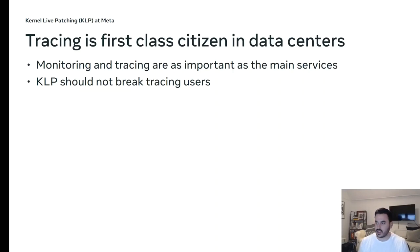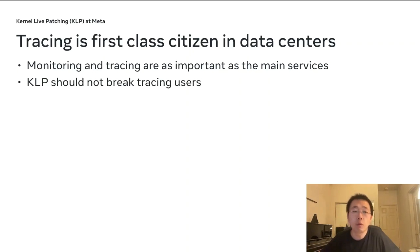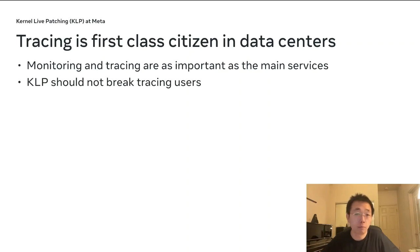Tracing is a first-class system in data centers — monitoring and tracing are as important as the main service. If the main service goes down, on-call wakes up at night to fix it. If monitoring goes down, on-call also wakes up at night to fix it. As a result, KLP should not break any tracing users.